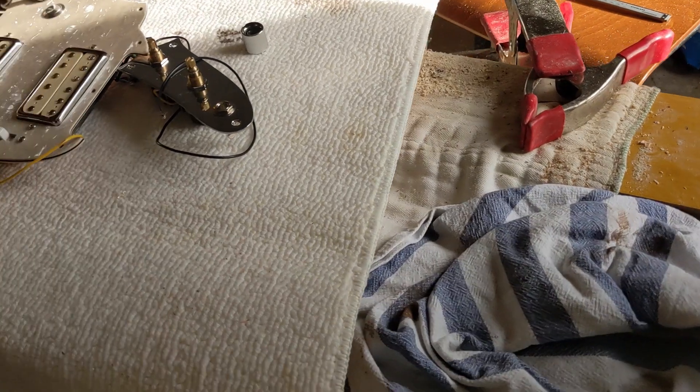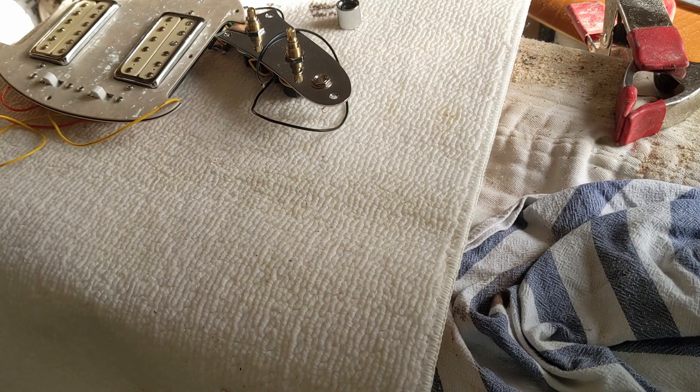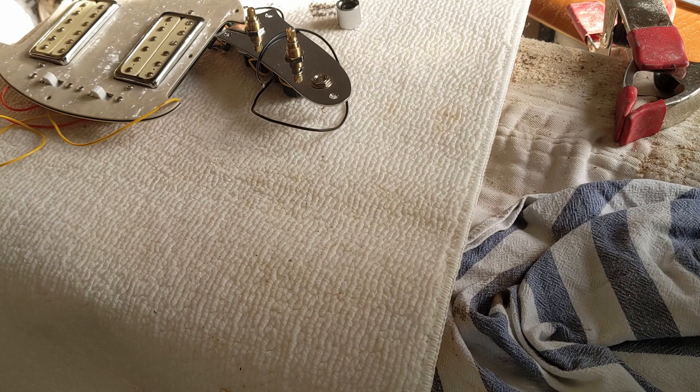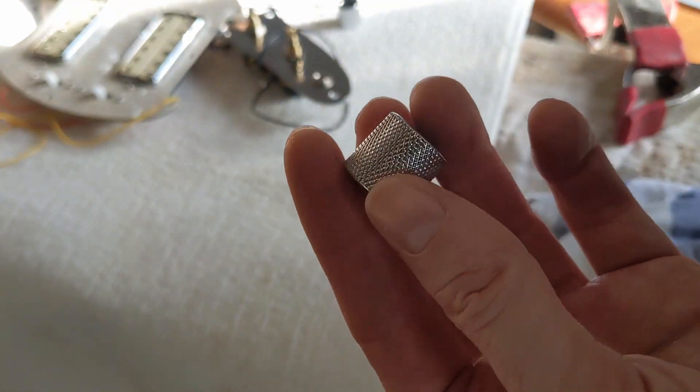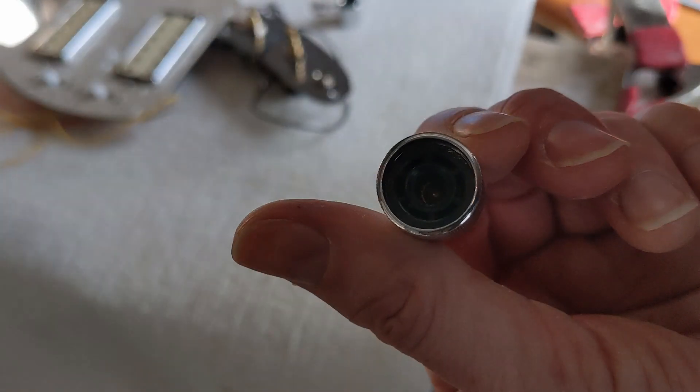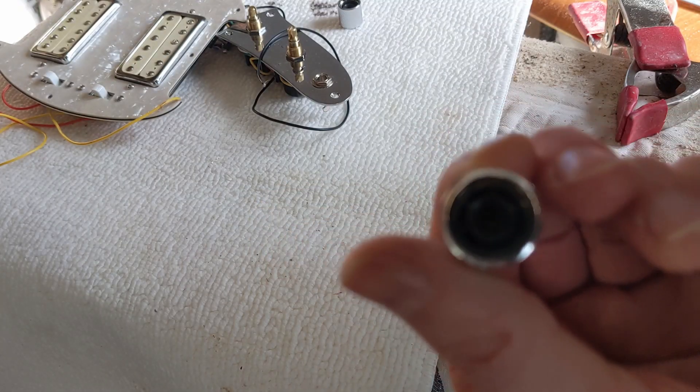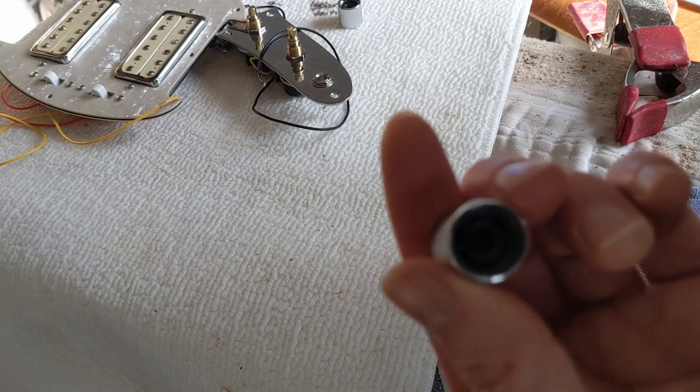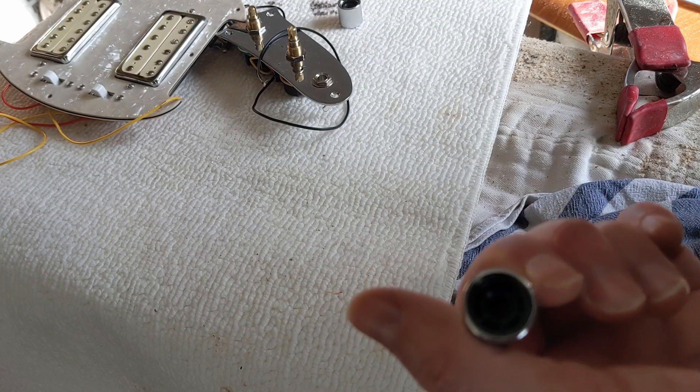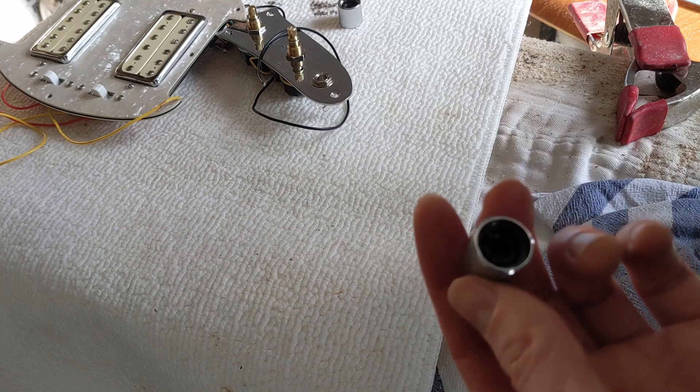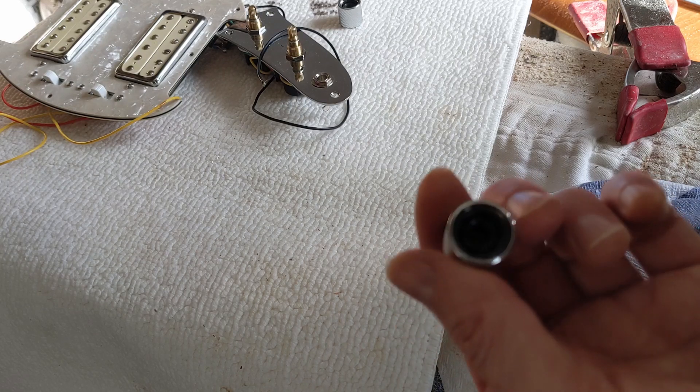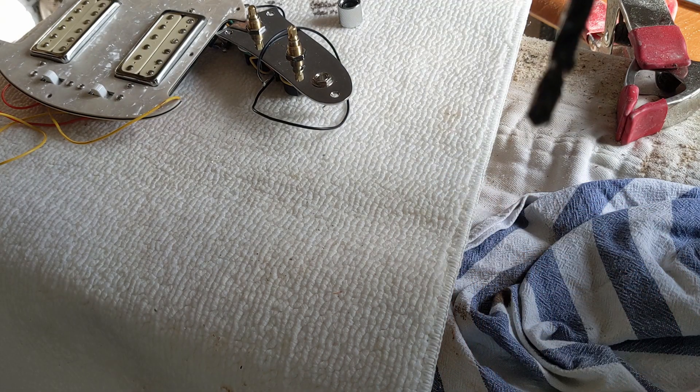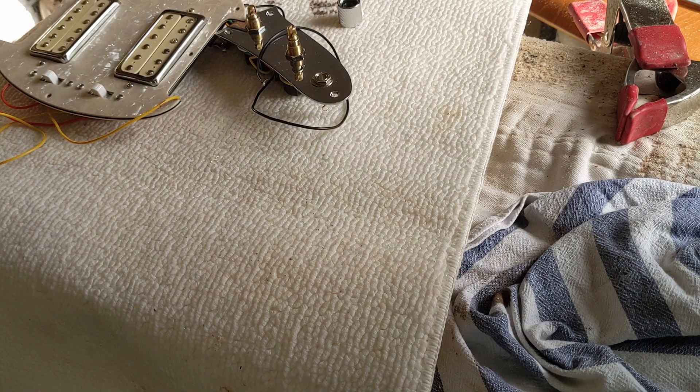Okay, so these CTS pots, the push-pull ones, are imperial. So your sort of conventional 6.3 millimeter or 6 millimeter wouldn't fit. And so, a lot of blogs say you drill it out with a quarter inch bit. But actually, that's not true. It's 15-64ths. So if you do do this, use 15-64ths to drill it out, and it'll fit perfectly.